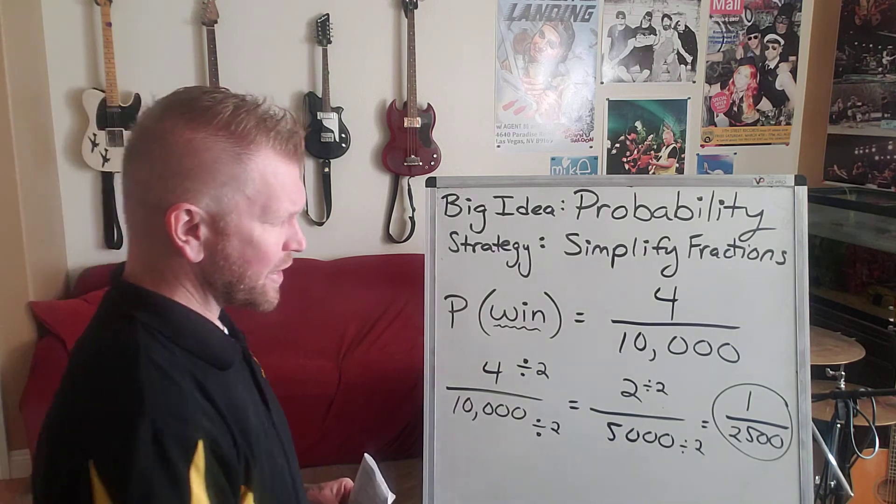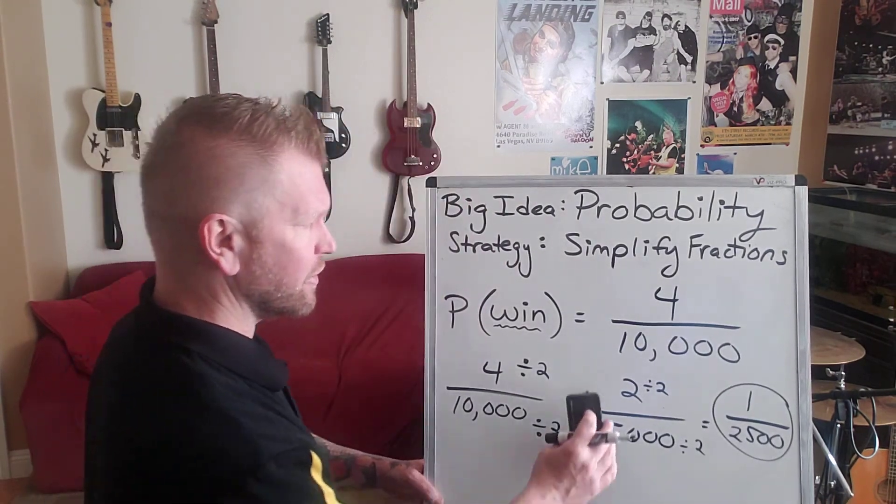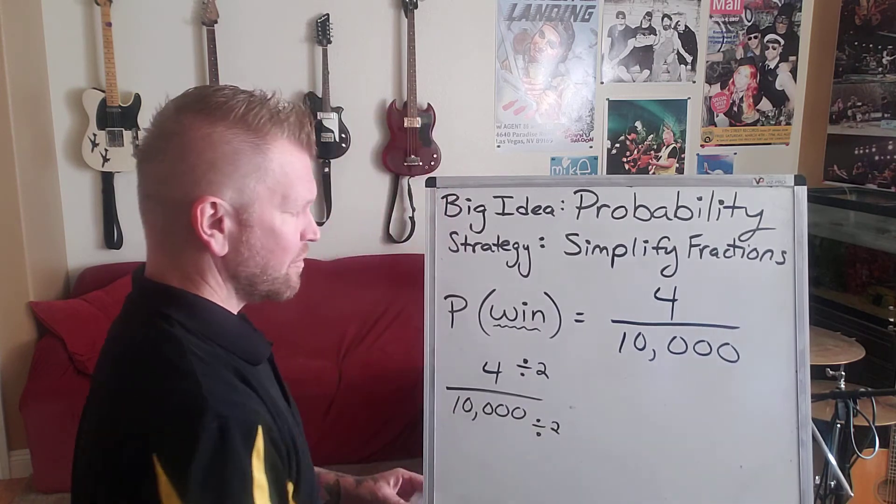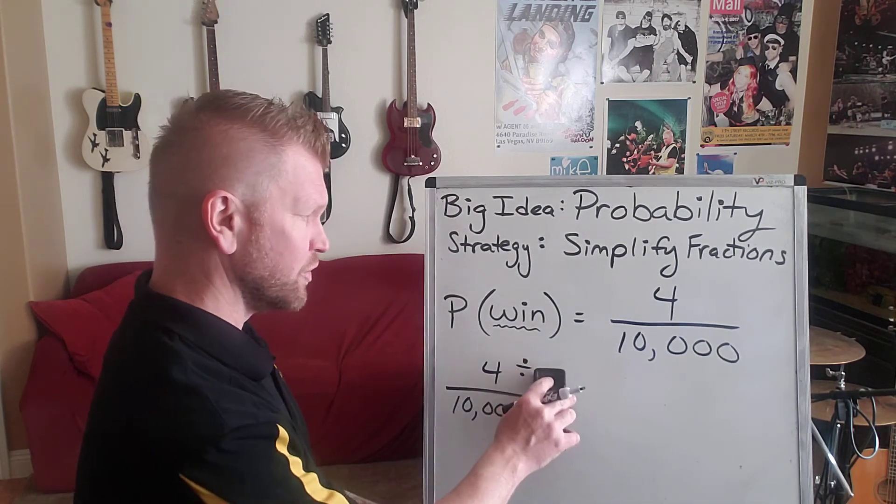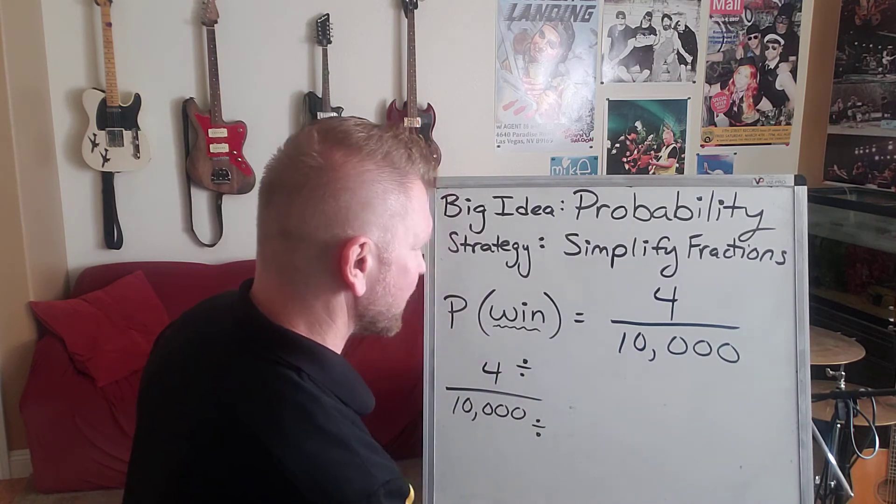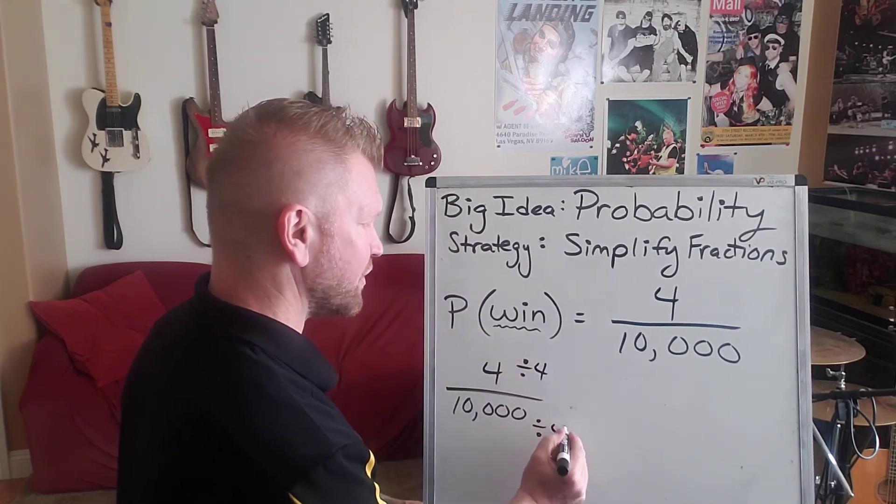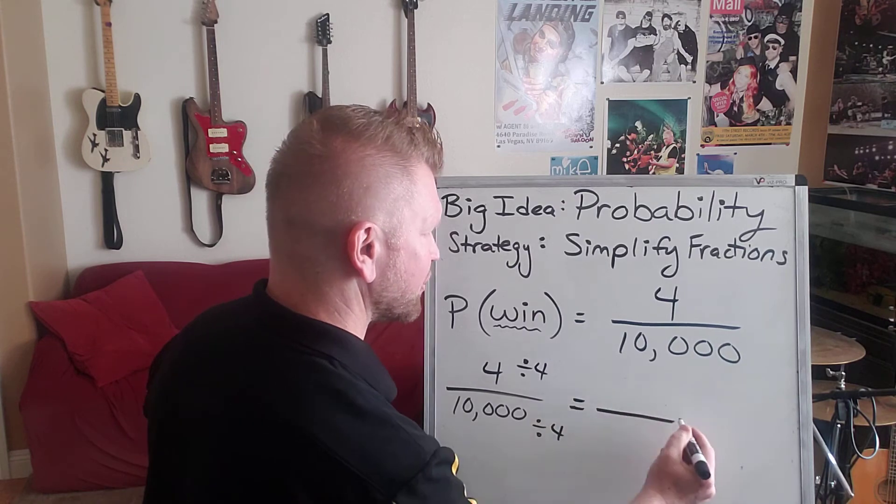And let's go back to this step right here. Remember, I said there's a few numbers that are divisible into four and 10,000. One of them is two. But usually, if you take the greatest common factor, that's going to be a little bit better for you. It saves you a little bit of work.